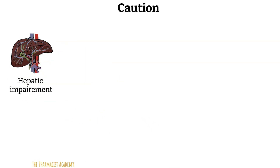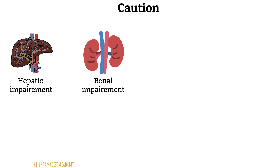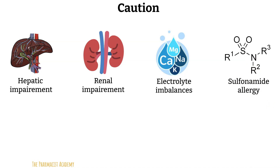Some general precautions to consider: avoid use in hepatic disease such as cirrhosis or impaired hepatic function, as liver injury is a rare but reported side effect. Because these agents work in the kidneys, avoid use in patients with renal impairment — dosing adjustments may be required depending on creatinine clearance. Avoid these agents in patients with hyponatremia, hypokalemia, and metabolic acidosis due to loss of bicarbonate. The backbone of the carbonic anhydrase inhibitor chemical structure is a sulfonamide, so do not use them in patients with hypersensitivity to sulfur or sulfonamide-type drugs due to the risk of fatal anaphylactic shock.